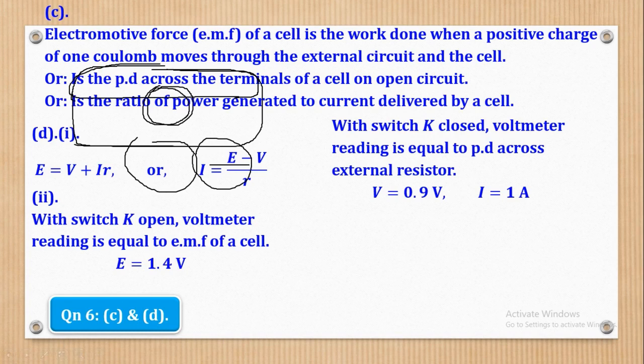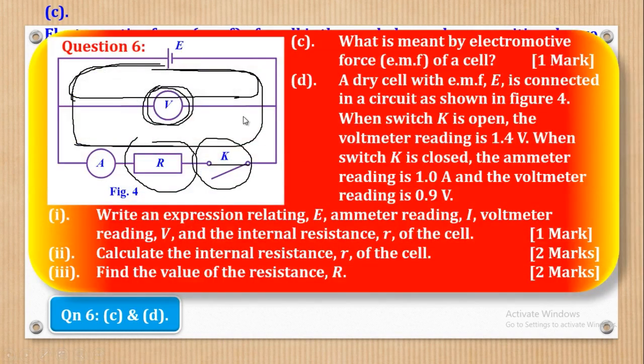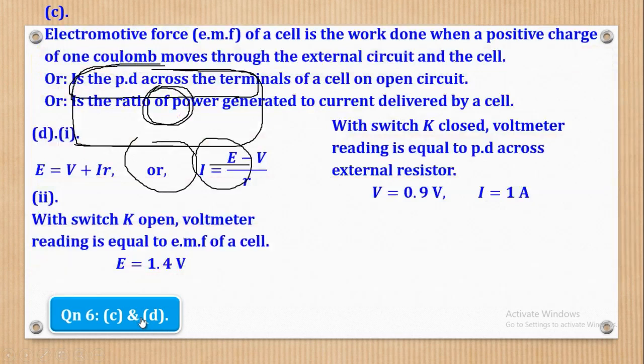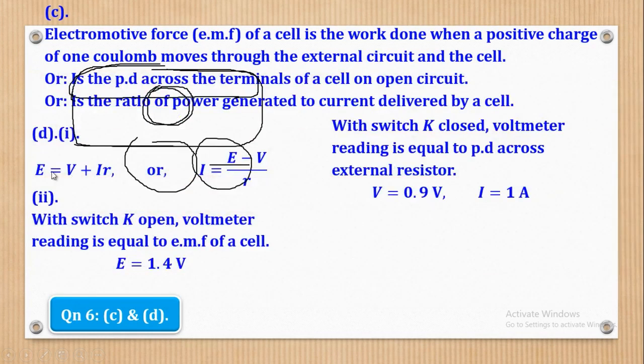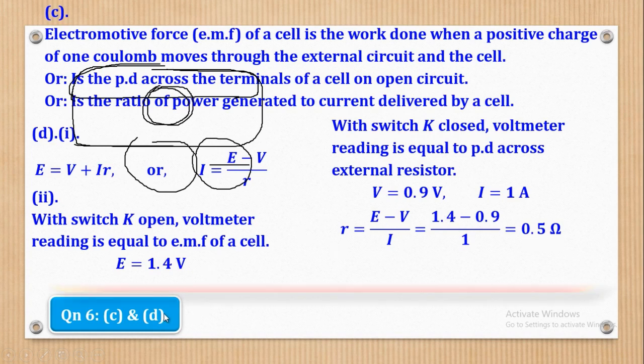So she'll come and say that with switch K closed, voltmeter reading is equal to PD across the external resistor. What does that mean? It means that capital V is equal to 0.9V and the current, which is I, is equal to 1 ampere. So that current is the total current which flows through the circuit. Now that we know E, we know V, and we know I, we can come in this equation relating E, V, I, and R to come up with the internal resistance which they want, because we know E, we know V, we know I, therefore R is the only unknown. So we shall come and substitute and make R the subject. So when we make R the subject, we shall come up with small r being equal to 0.5 ohms. And basically that's what they wanted in Roman 2.